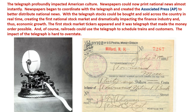The telegraph profoundly impacted American culture. Newspapers could now print national news almost instantly. Newspapers began to coordinate with the telegraph and created the Associated Press, or AP, to better distribute national news. With the telegraph, stocks could be bought and sold across the country in real time, creating the first national stock market and dramatically impacting the finance industry, and thus economic growth. The first stock market tickers appeared, and you see one of them here on the bottom left.